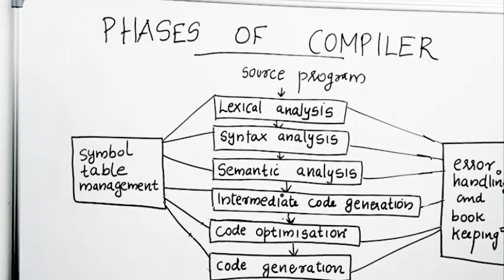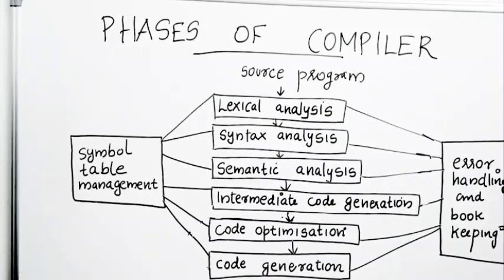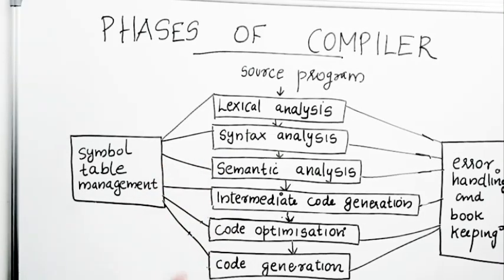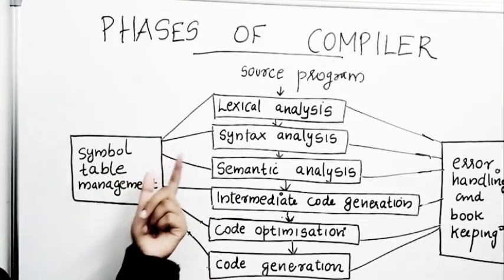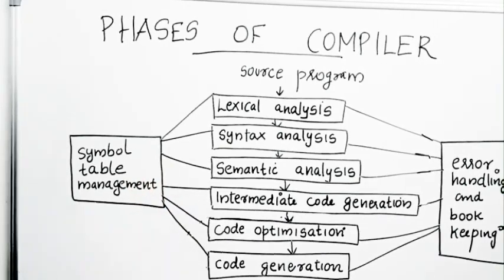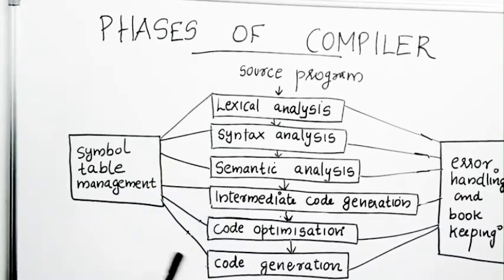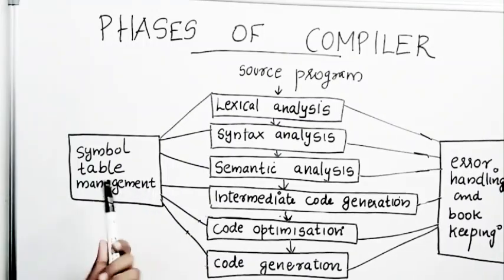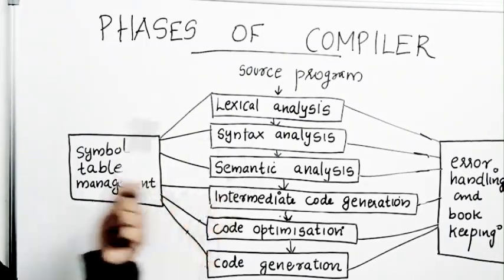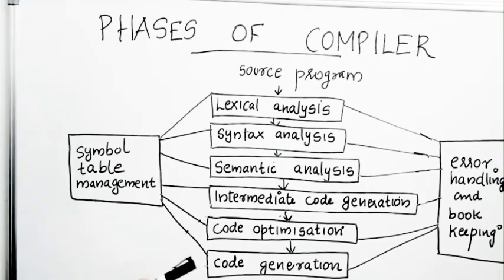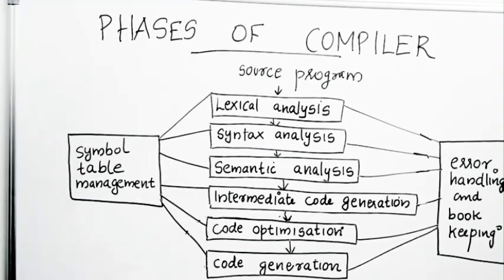In this video we will see the different phases of the compiler. A compiler is a program that converts a source program into a target code. The target code can be a high level program or a machine code, depending upon the compiler you're using. The different phases of the compiler are: lexical analysis, syntax analysis, semantic analysis, intermediate code generation, code optimization, and code generation. There are two supporting utilities: symbol table management and error handling.